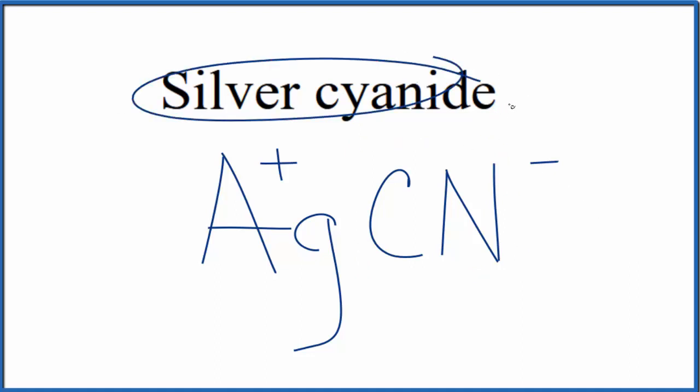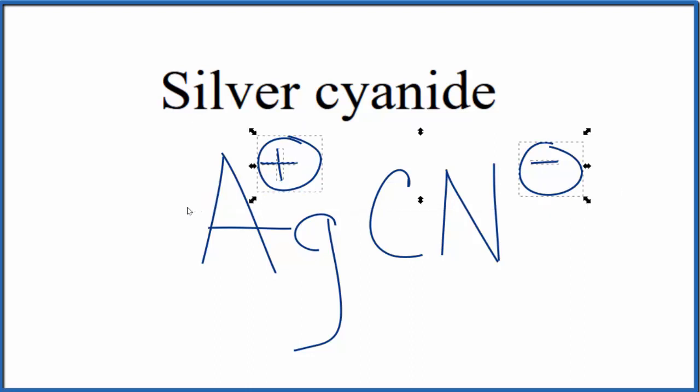Since this is neutral, don't have the word ion after it, these two charges, the 1 plus and the 1 minus, they need to add up to zero. So 1 plus and 1 minus, that adds up to zero, gives us a net charge of zero.